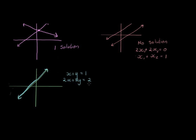And this is another possibility, and in this case we will have infinitely many solutions. Every point on that line will be a solution to both of these equations at the same time.